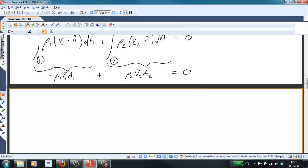But A one and A two are the same. The pipe has the same cross-sectional area at both sections. So we can rewrite: the average velocity at one is equal to the average velocity at two times the ratio of rho two over rho one.